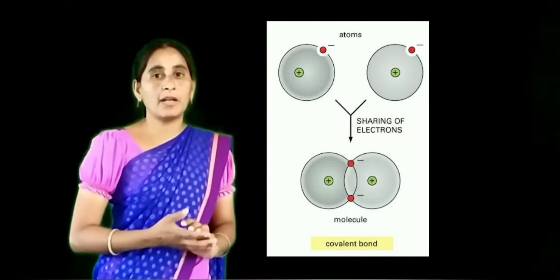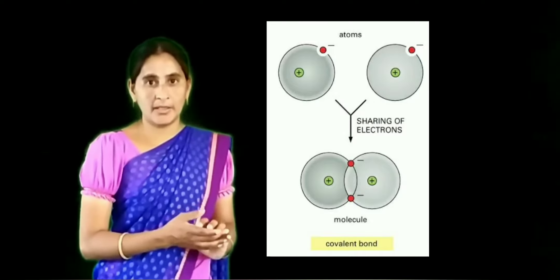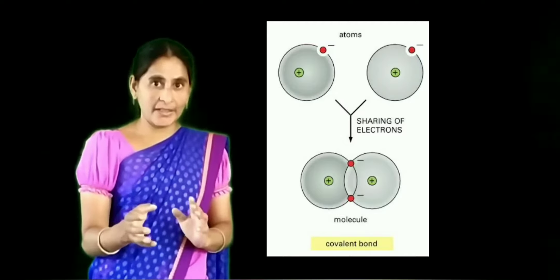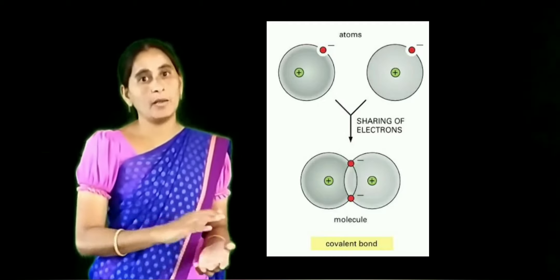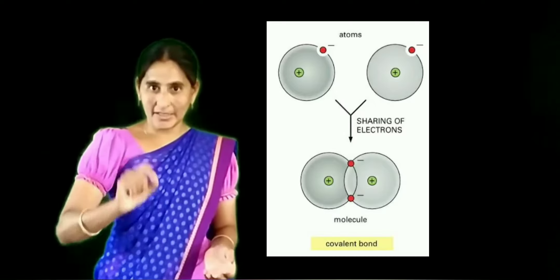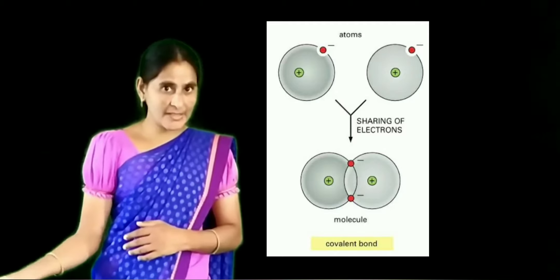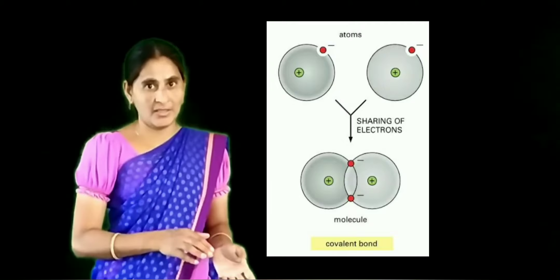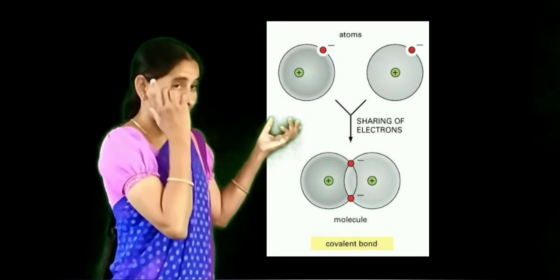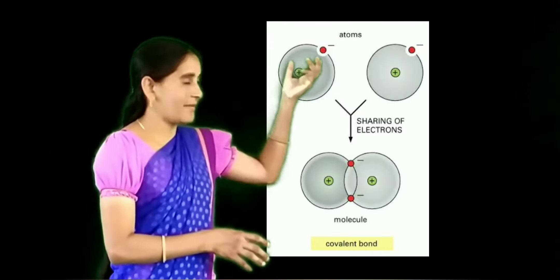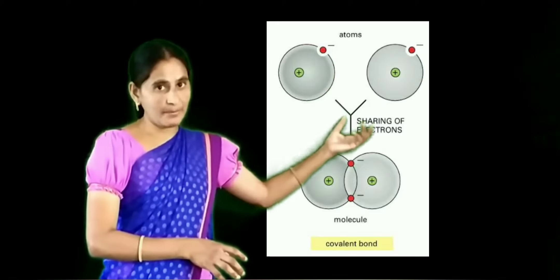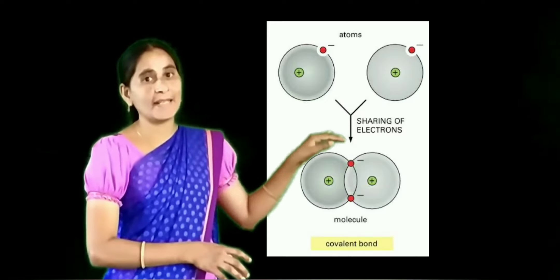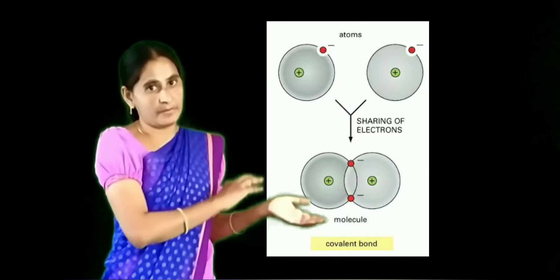For example, you have only one pen. Your friend did not bring a pen. The teacher is dictating very slowly. Both of you agreed to write one after the other with a single pen. First you write and give the pen to your friend, your friend writes and gives it back. With a single pen, both of you are managing. Like that, some elements have only some unpaired electrons in their outermost orbit, and those unpaired electrons will be mutually exchanged between two atoms.